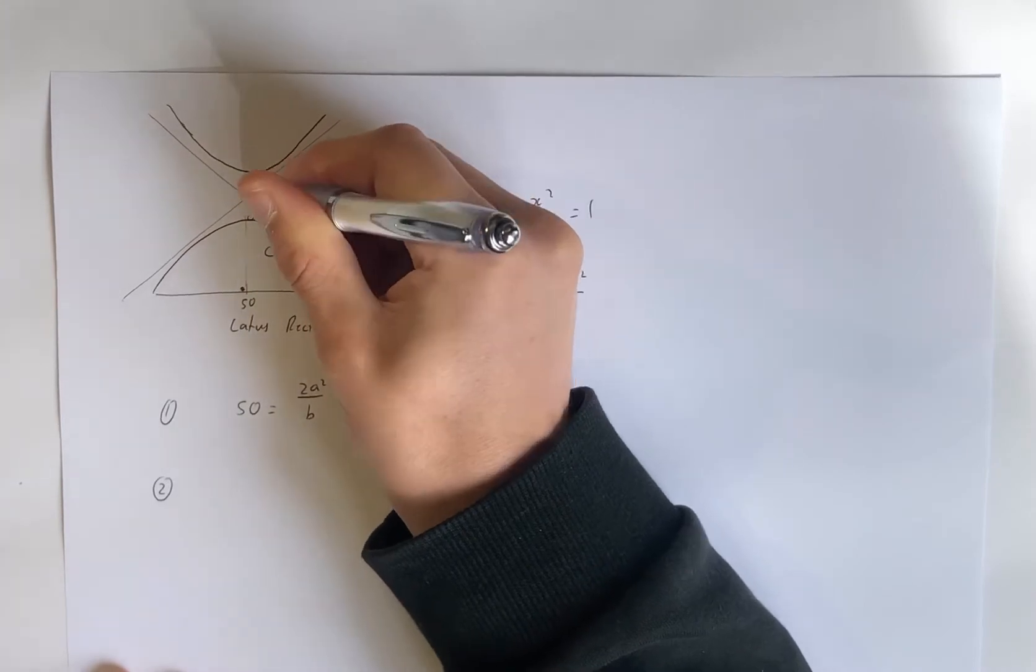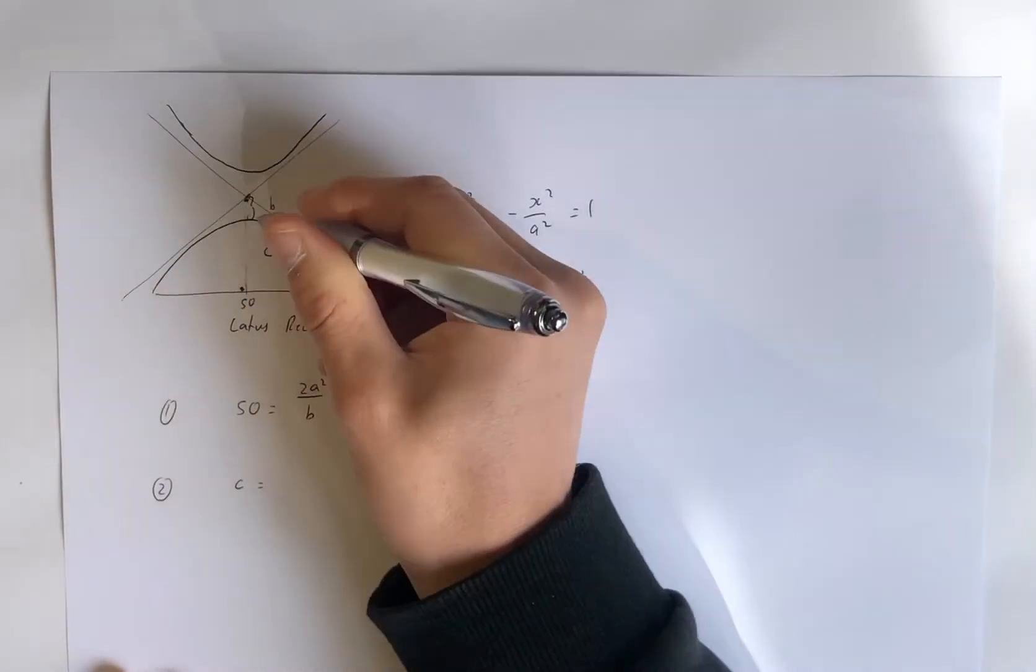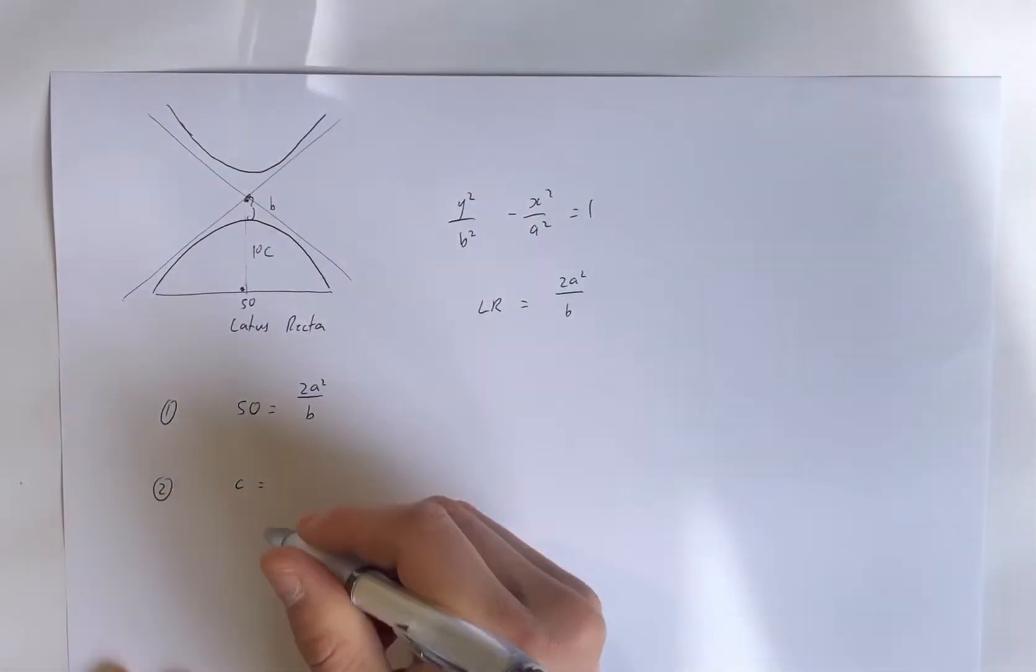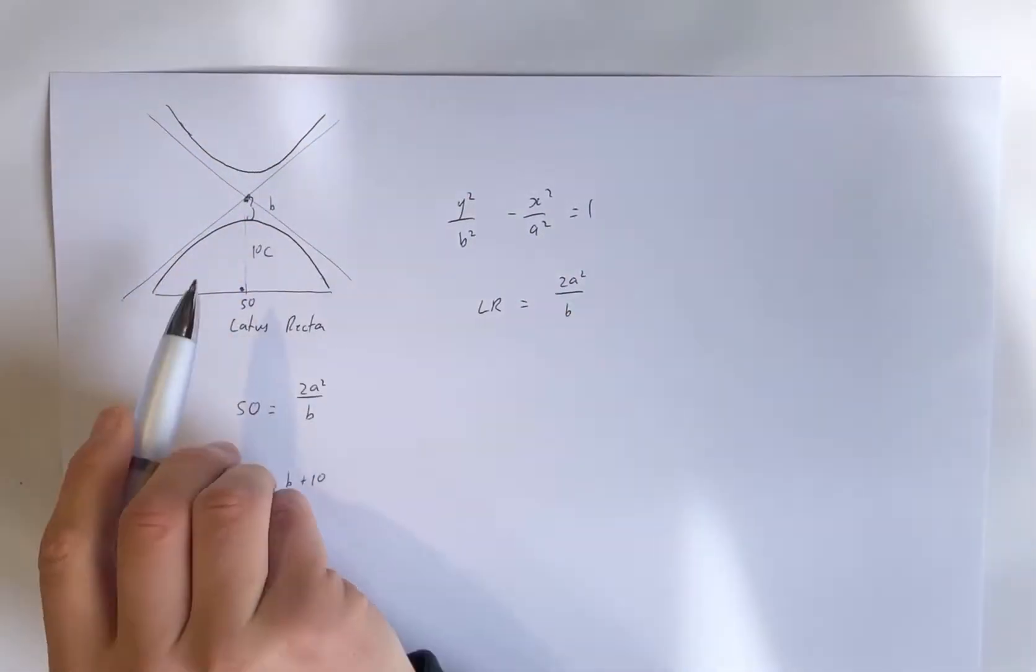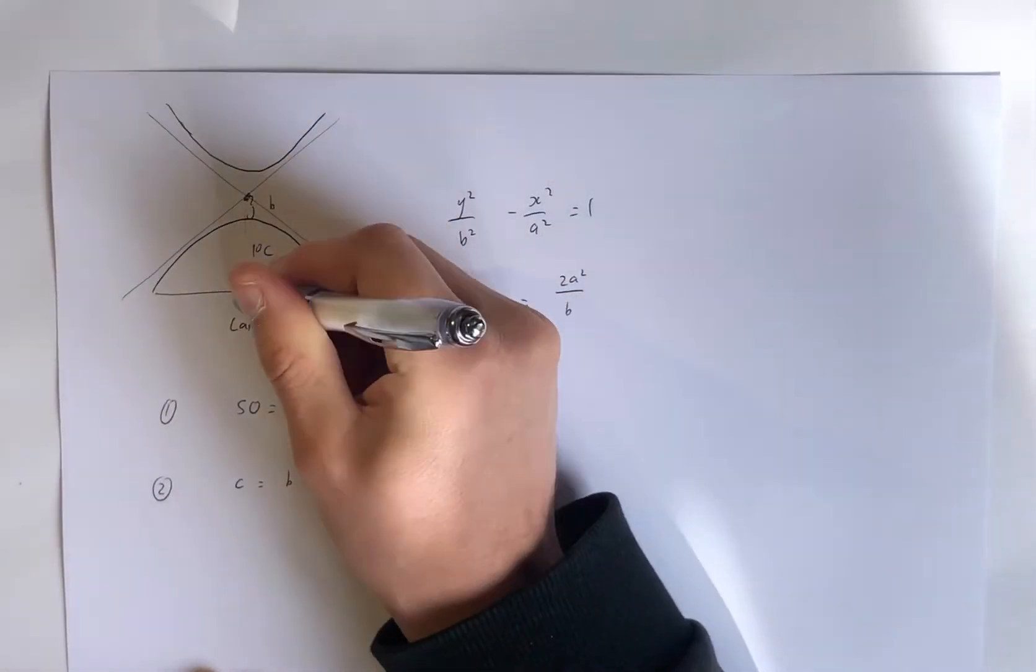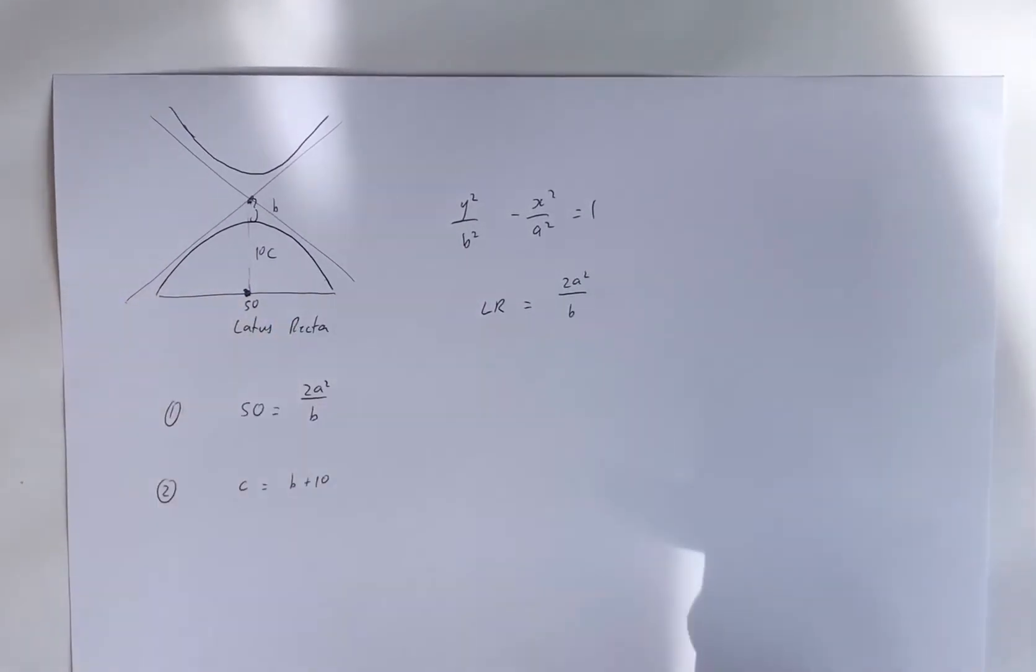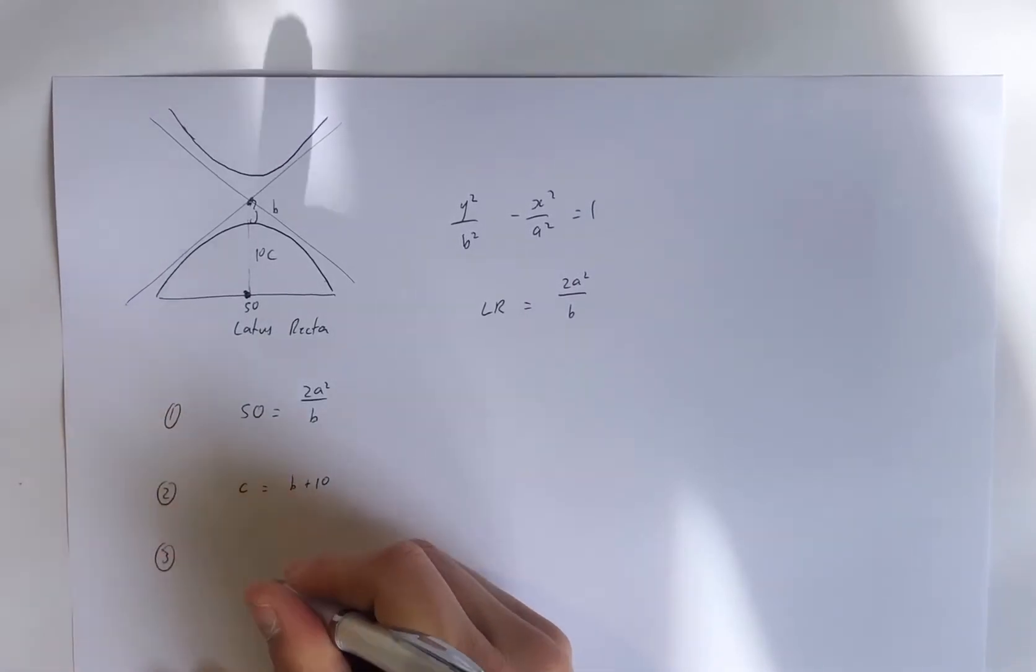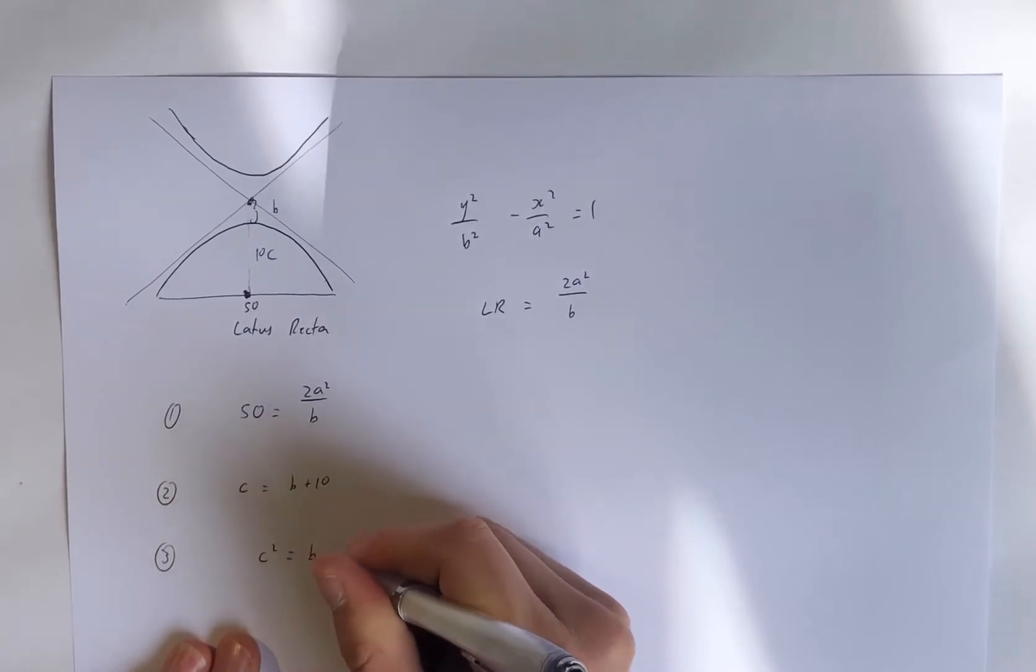I'm not going to prove the lattice rectum length. Just using it is pretty impressive in itself. So the second equation that we have is that the distance from the centre to the focal point is c, and the distance from the centre to the vertex is b. So we know that c is b plus 10. Don't we? c is b, the distance from the centre to the vertex, plus from the vertex to the focal point.